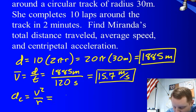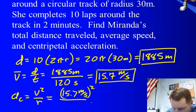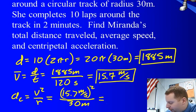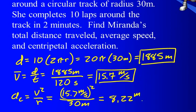I substitute in with units, 15.7 meters per second squared, divided by our radius of 30 meters, and I come up with a centripetal acceleration of about 8.22 meters per second squared.